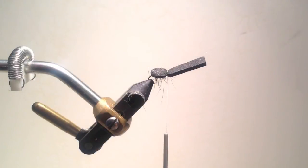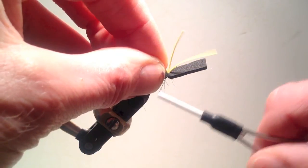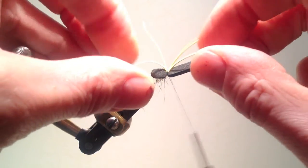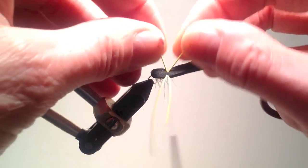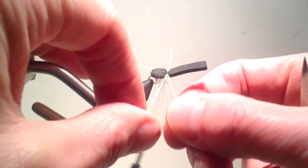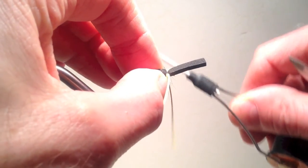For stillwater use, you may want to add some rubber legs for a little more action or micro-movement. Simply lightly tie the legs into the top of the fly, then pull them into appropriate position on the side of the fly before binding them tightly in place. Once they're bound tightly in place, they can be cut to the proper length.